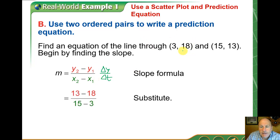For our points, 3 comma 18 and 15 comma 13, we're talking about delta y being 13 minus 18 or negative 5. And then in the denominator, we've got delta t, the difference in time, our years between the two data points, and that's 15 minus 3 or 12.